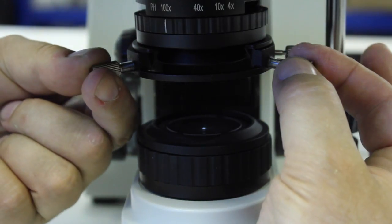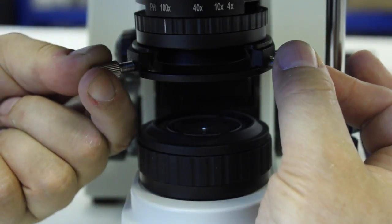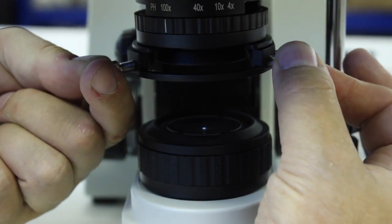We can see this closed iris diaphragm bright spot down the microscope, and these two controls either side of the condenser assembly move the condenser laterally in either direction. The idea is to move the center spot until it's right in the center of the field of view, and when it's right in the center, just stop.